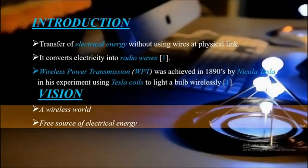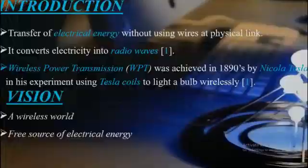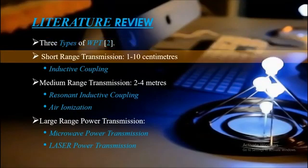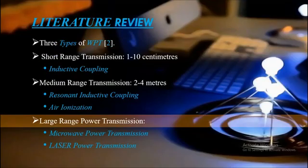Tesla had a vision of a wireless world and a free source of electricity for everybody, such that people could use electricity for free — but unfortunately this was never accomplished. There are three types of WPT by energy range: short range, medium range, and long range transmission. There are different techniques to achieve these power transmissions as listed in the slides, and we will further discuss all of these techniques in our next phase — how it is achieved.